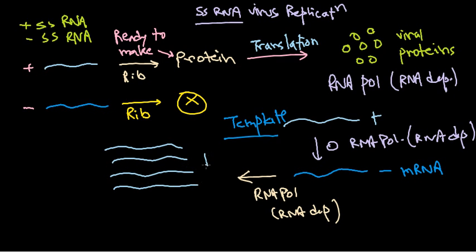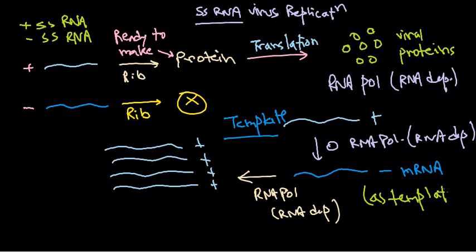Our goal is to produce more positively-stranded mRNA, but we cannot get it by simple replication of the positive strand, because using the positive strand as a template only yields negatively-stranded mRNA. We need to take another round of the same process — using the negatively-stranded mRNA as a template with RNA-dependent RNA polymerase to get many more copies of positively-stranded mRNA. If you use the positive strand you get the negative strand, and if you use the negative strand as a template you get the positive strand, giving you more and more positively-stranded mRNA, which is the genetic material of this virus.